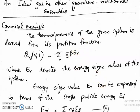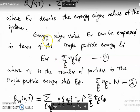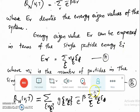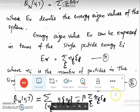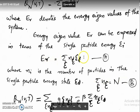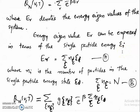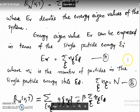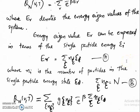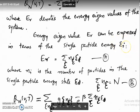Here E_r denotes the energy eigenvalues of the system. We are summing over the different energy eigenvalues of the system to get the partition function. In terms of single particle energy levels, epsilon_i is the average energy of the i-th cell. The single particle energy levels were grouped into different cells, and epsilon_i is the average energy of the i-th cell.